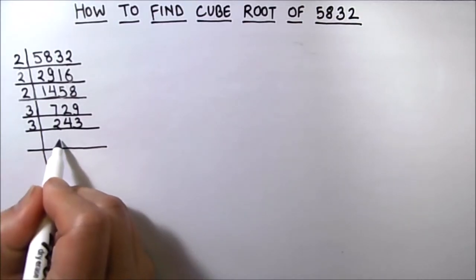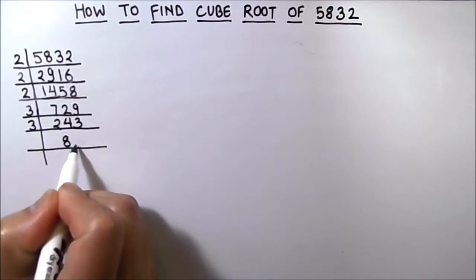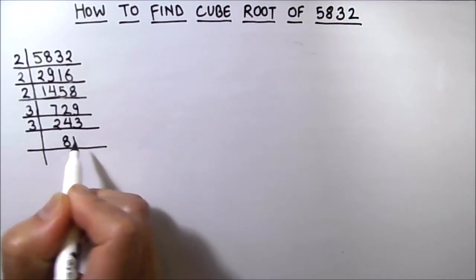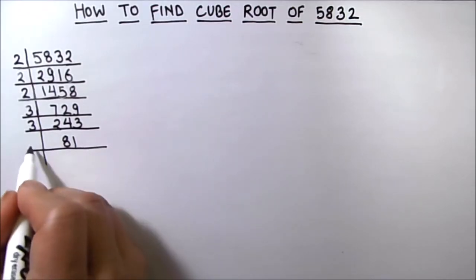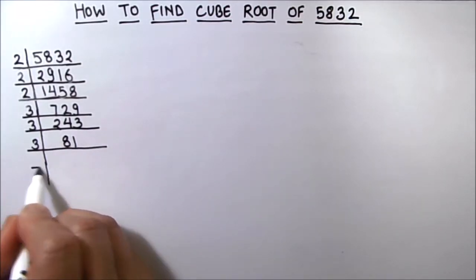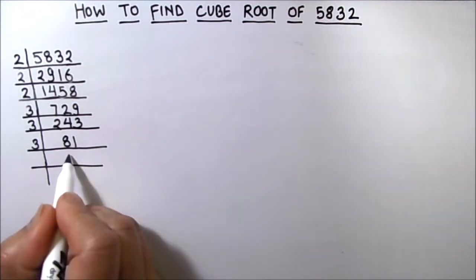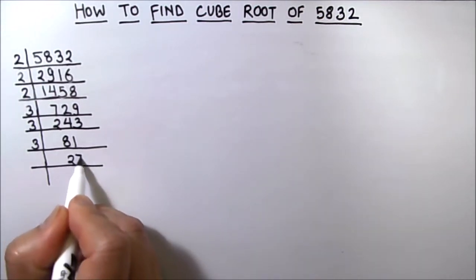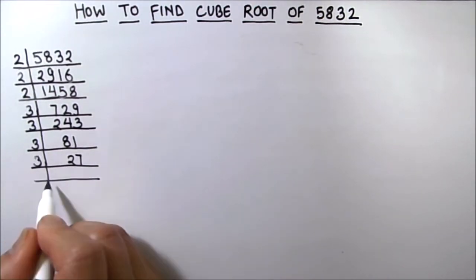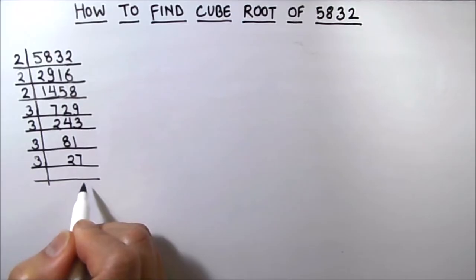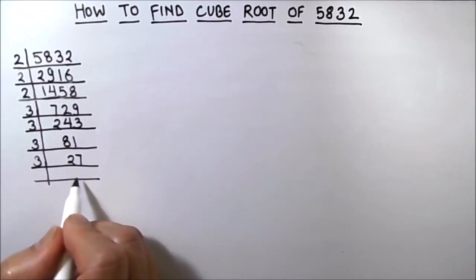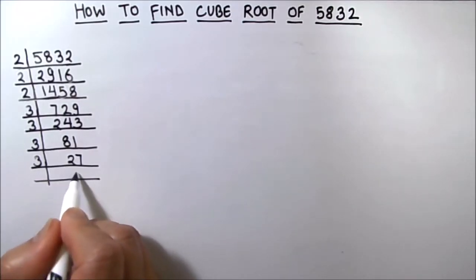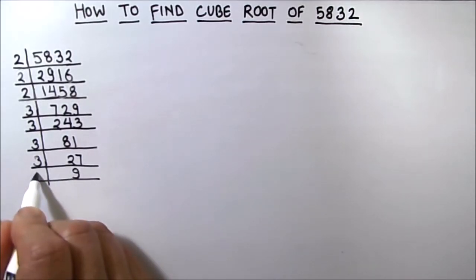3 times 8 is 24 and 3 times 1 is 3. Again we will use 3 as a divisor. 3 times 2 is 6 and 3 times 7 is 21. 27 is divisible by 3, so 3 times 9 is 27.